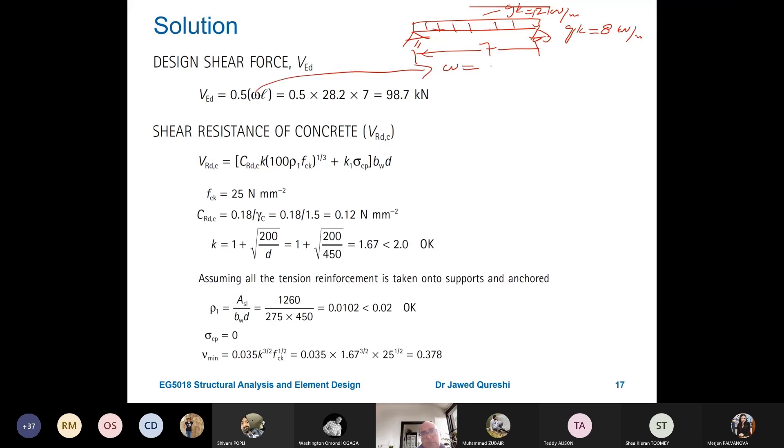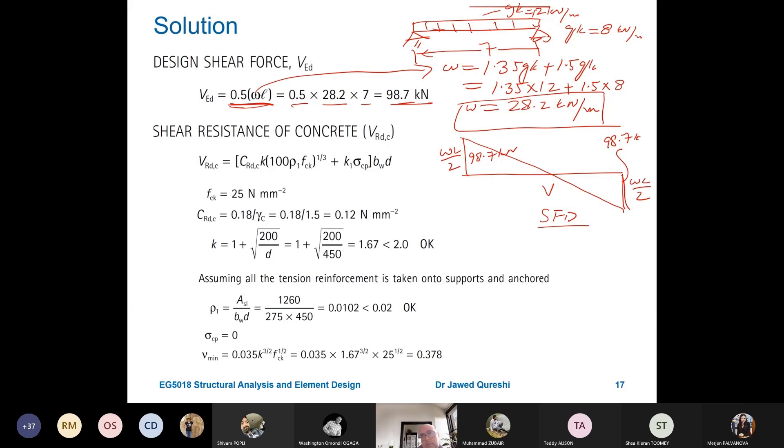So, this W is equal to 1.35 GK plus 1.5 QK, 1.35 into 12 plus 1.5 into 8. This will give me plus 1.5 into 8, 28.2. Now, this is the design load. And you know that if you have this member, then shear force diagram SFD is like this. We can term it as SFD or V. And this is WL over 2. So, this is what we have done over here. 0.5 times 28.2 times 7. The design shear load is 98.7 kN. Does it make sense?